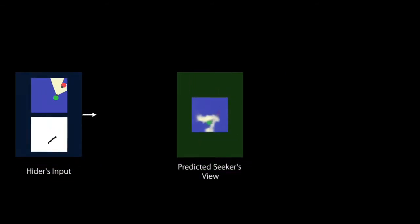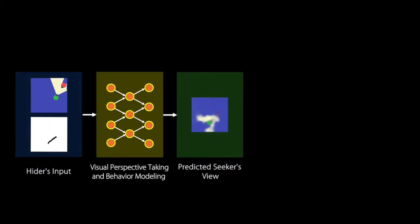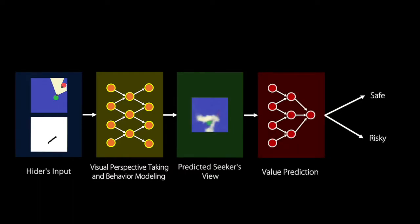In addition to visual perspective taking and behavior modeling, we also demonstrate that the model can be used for interpretable and explainable action planning. Here, we take the future predictive view of the seeker agent to train a separate value prediction network where the output indicates whether the seeker will catch the hider at that future moment.